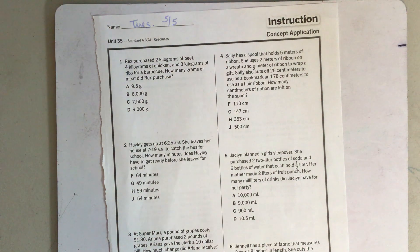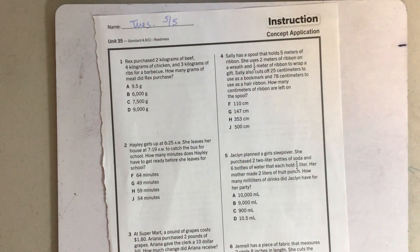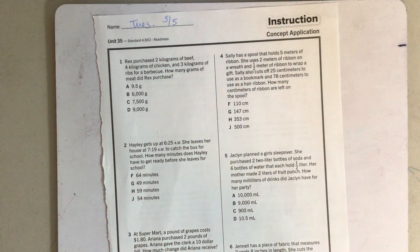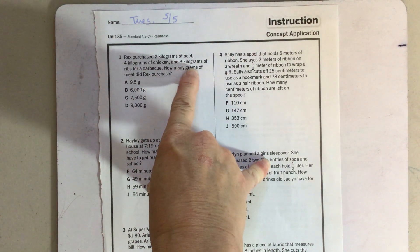Rex purchased two kilograms of beef, four kilograms of chicken and three kilograms of ribs for a barbecue. That sounds good. It is actually almost six o'clock on Wednesday evening and I have not eaten dinner yet. We were talking about actually getting ribs. So having a barbecue, how many grams of meat did Rex purchase?